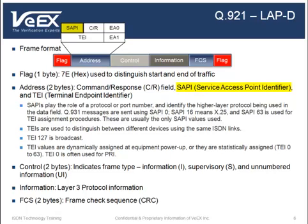Q921 uses service access points to provide service to Q931. The access points are denoted with a SAPI to show the higher layer protocol used in the data field. Q931 messages are sent with SAPI 0. X25 messages are sent with SAPI 16, and SAPI 63 is used for terminal endpoint identifier assignment procedures. A TEI identifies the terminal equipment on the data link connection. TEI 127 is for broadcast. TEI values can be dynamically assigned at equipment power-up or statically assigned from TEI 0 to TEI 63. TEI 0 is often used for PRI.